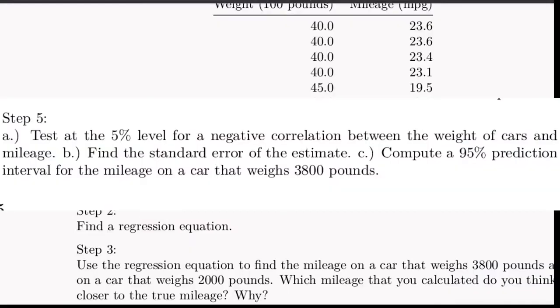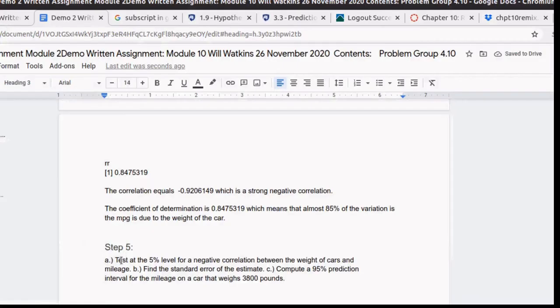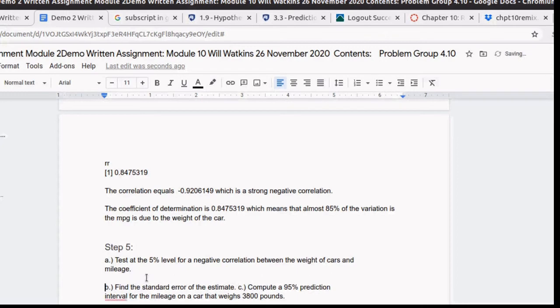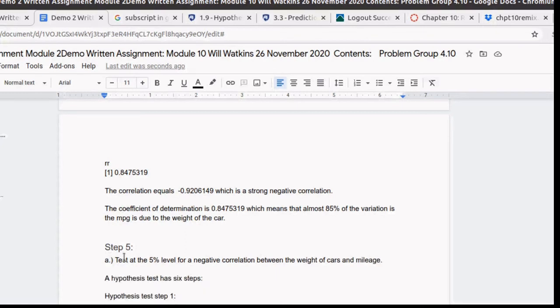So now let's look at step five. Step five has three parts to it. And then we've got a, b, and c. In step five, we're supposed to do a hypothesis test. A hypothesis test itself has six steps. The first step in the hypothesis test is to state the random variables and the parameter.